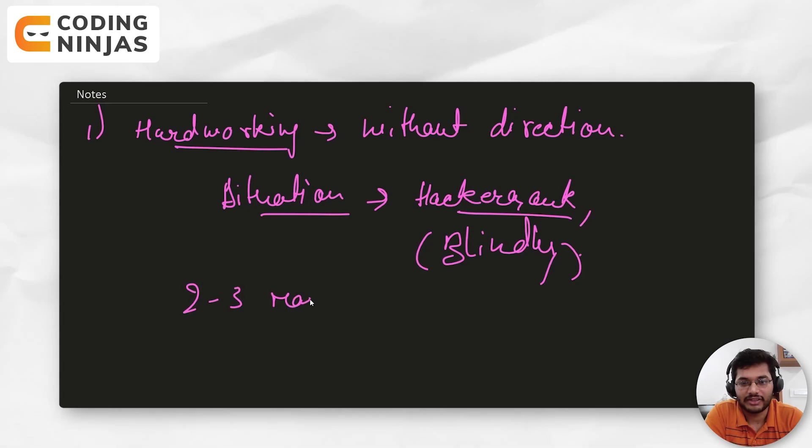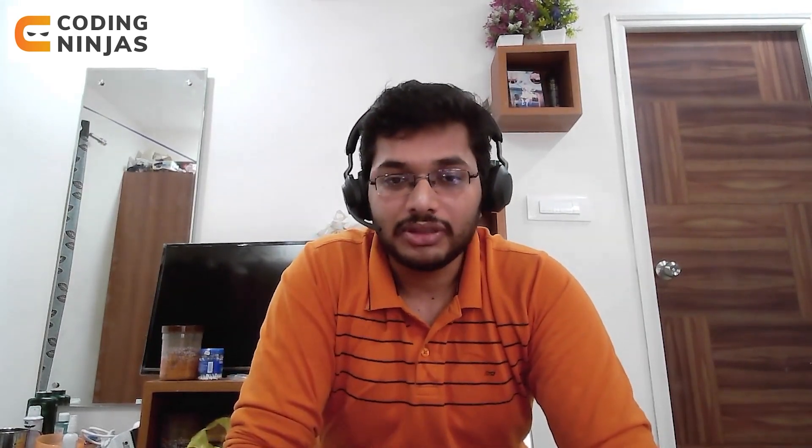Being somewhat introverted and just solving HackerRank blindly is not the key. Hard work is good, but in DSA smart work is also required. This is one mistake I regret today — it could have saved me two to three months. I eventually took a course and realized these are the topics of DSA I need to study. My friend told me about Coding Ninjas courses, and afterward I bought a course and got a structured learning path.